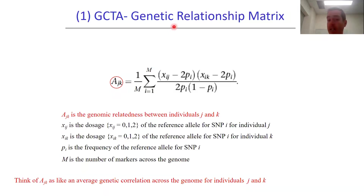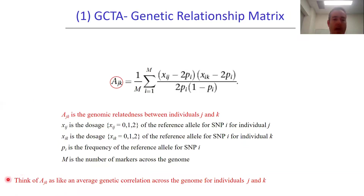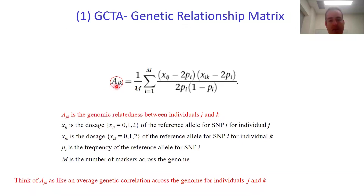If you've got n individuals in your sample, it's going to contain n choose two elements on the lower diagonal — the genome-wide genetic similarity between all pairwise combinations of individuals. Each element AJK, at row J column K, represents the average genetic correlation across the genome between two individuals J and K.